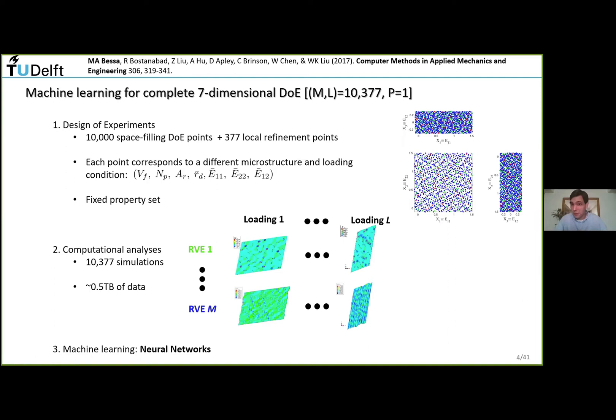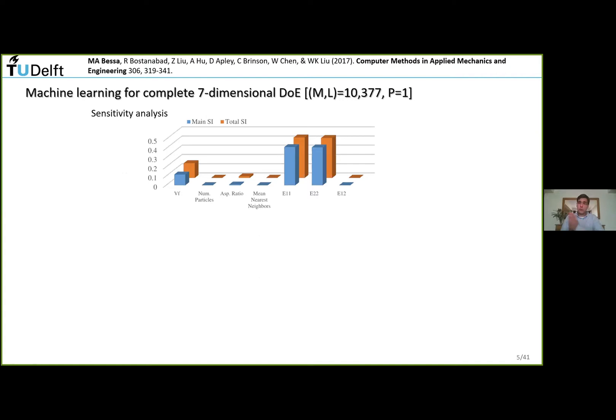Once you did the sampling, you do a simulation for each point. In this case, it was about half a terabyte of data. You do these different simulations - different boundary conditions, different microstructures under different loading conditions. Once you have the data, you can use machine learning, like artificial neural networks or Gaussian processes.